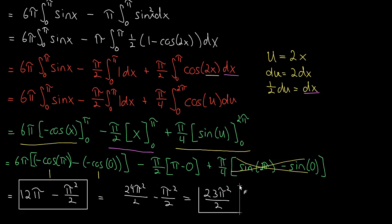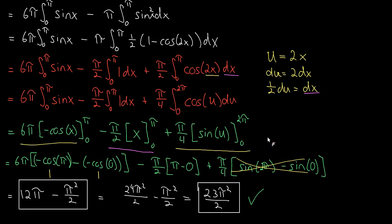The takeaway from this video is really just how to set up this more advanced washer method, plus a reminder on integrating sine squared using the trig identity and doing a simple u-substitution. In future videos we'll do the shell method and then work on deciding between disk, washer, or shell from start to finish.